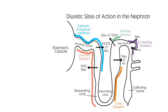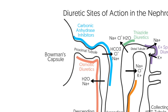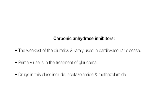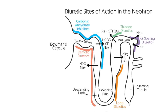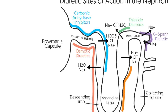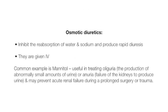Carbonic anhydrase inhibitors are the weakest of the diuretics and are rarely used in cardiovascular disease; their primary uses are in the treatment of glaucoma. Drugs in this class include acetazolamide and methazolamide. Osmotic diuretics inhibit the reabsorption of water and sodium and produce rapid diuresis; they are given IV. A common example is mannitol, which is useful in treating oliguria or anuria and may prevent acute renal failure during prolonged surgery or trauma.